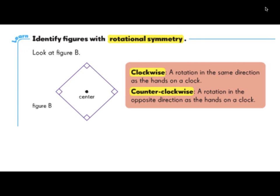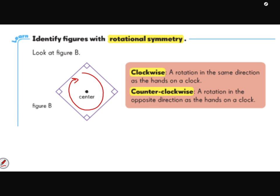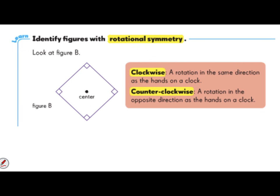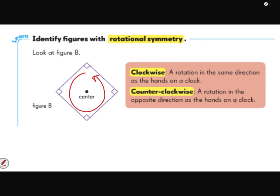When we rotate things, we can rotate them clockwise or counterclockwise. Clockwise goes around like this, and counterclockwise is the opposite - the opposite of the way a clock turns. So if we have this shape and we have the center of it - like where if I were going to rotate it, I would put my pencil down on that and turn my paper - that would be rotational.